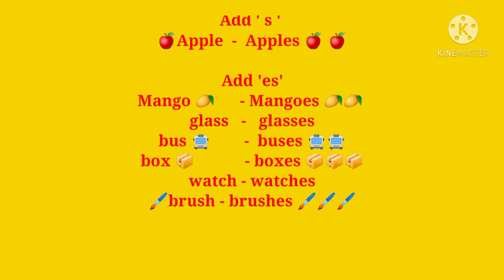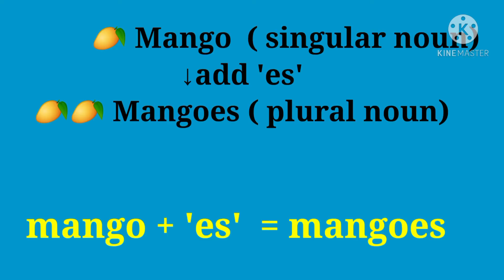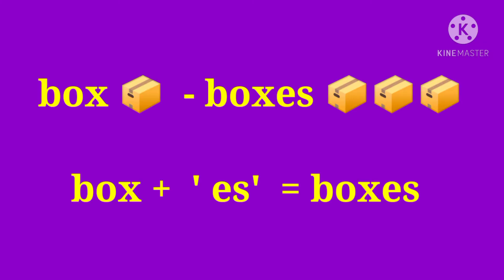For example: Mango → Mangoes, Glass → Glasses, Bus → Buses, Box → Boxes, Watch → Watches, Brush → Brushes. Take the example 'Mango' — it is a singular noun and it ends with the letter O. So the plural form is Mangoes: Mango + ES = Mangoes. In the same way, Box ends with the letter X, so Box + ES = Boxes.